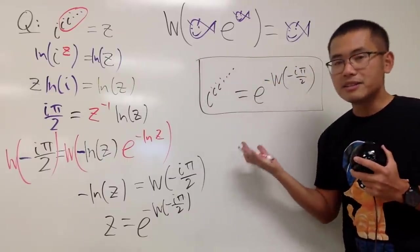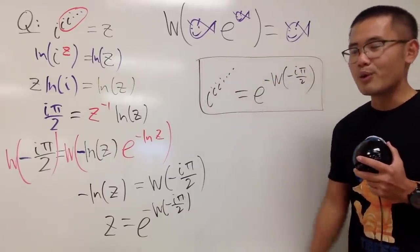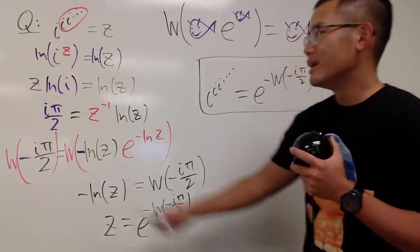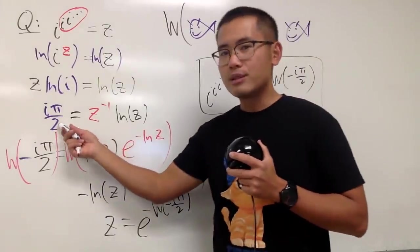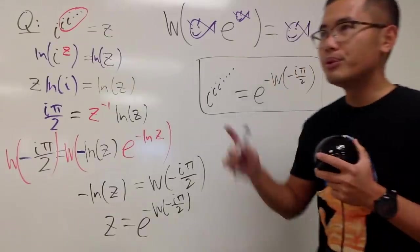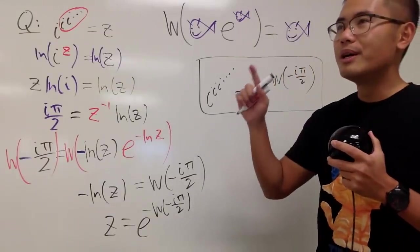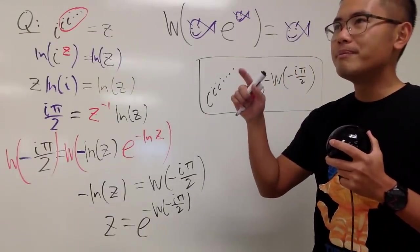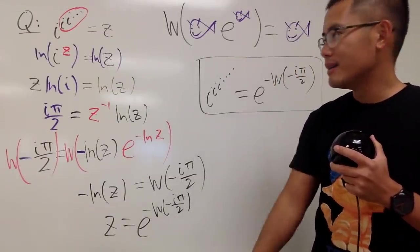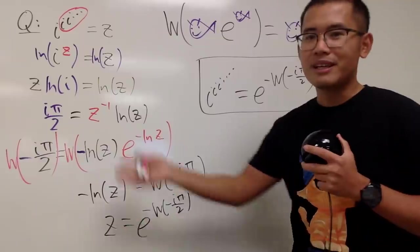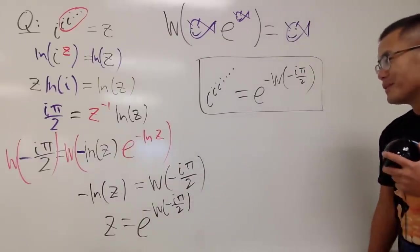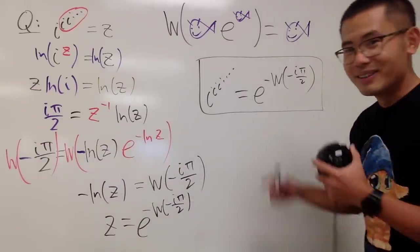This is just the principal value for the answer. If you would like, you can put down the plus 2nπ — that's up to you. Whatever you want to do, just do it.